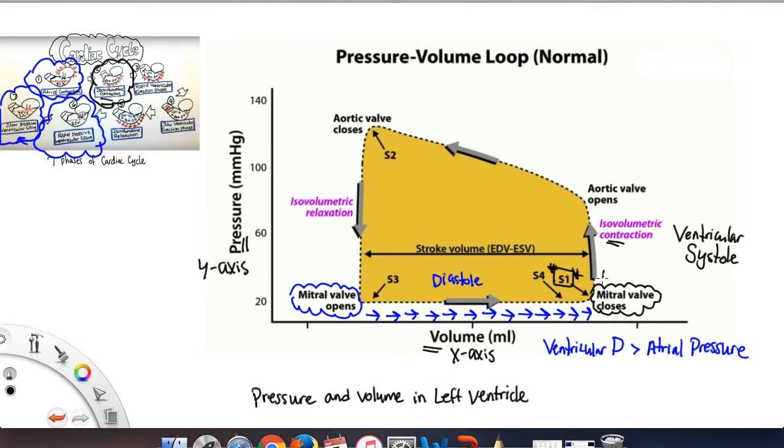And you can see from the graph that the volume is not changing, it's just the pressure that increases and it continues to increase until eventually when the ventricular pressure exceeds the aortic pressure and that causes the aortic valve to open.